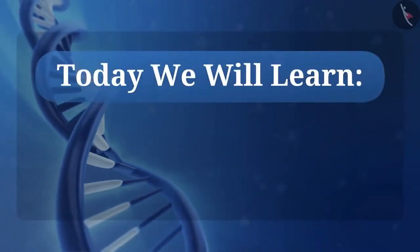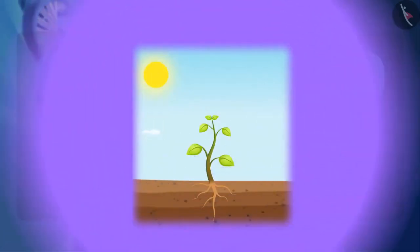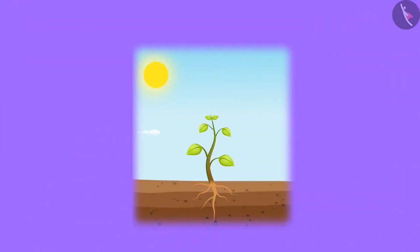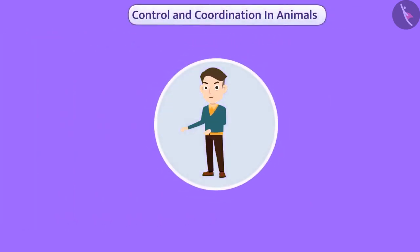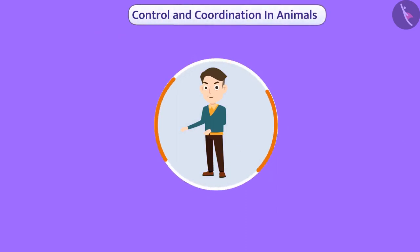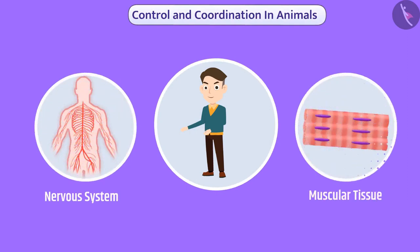Today we will learn about nervous control. In the last video we learned about control and coordination in plants. Today let's talk about control and coordination in animals. In animals, control and coordination is carried out by the nervous system and muscular tissue.